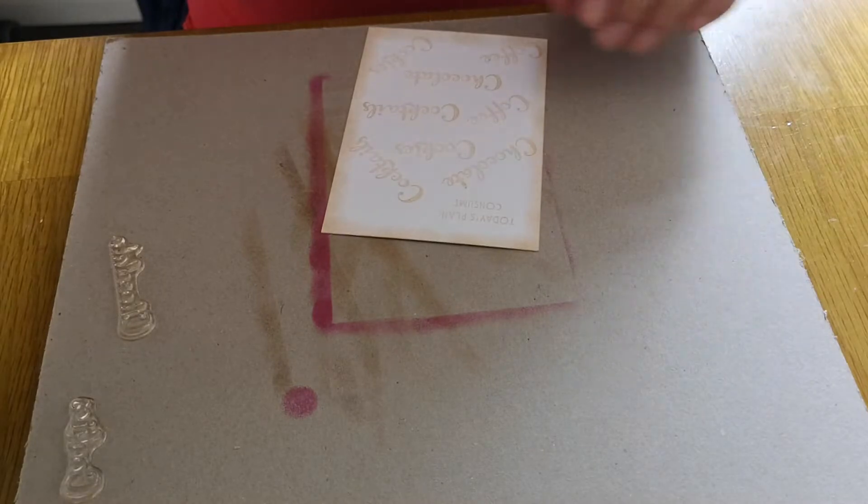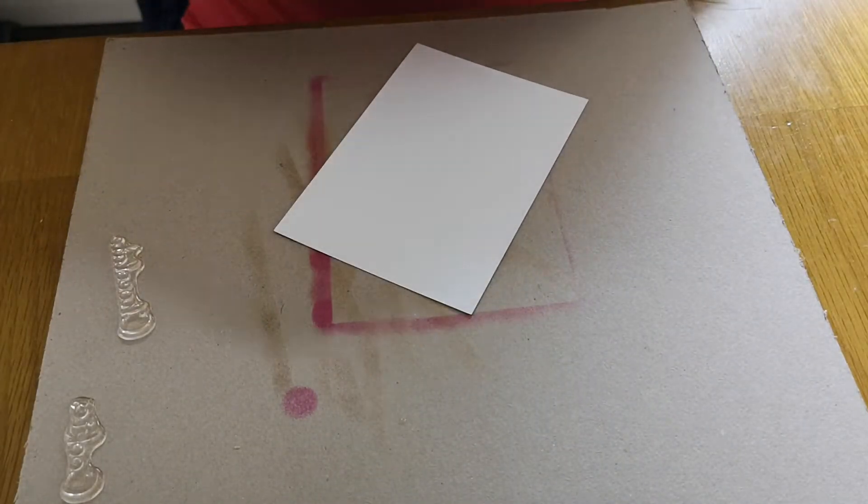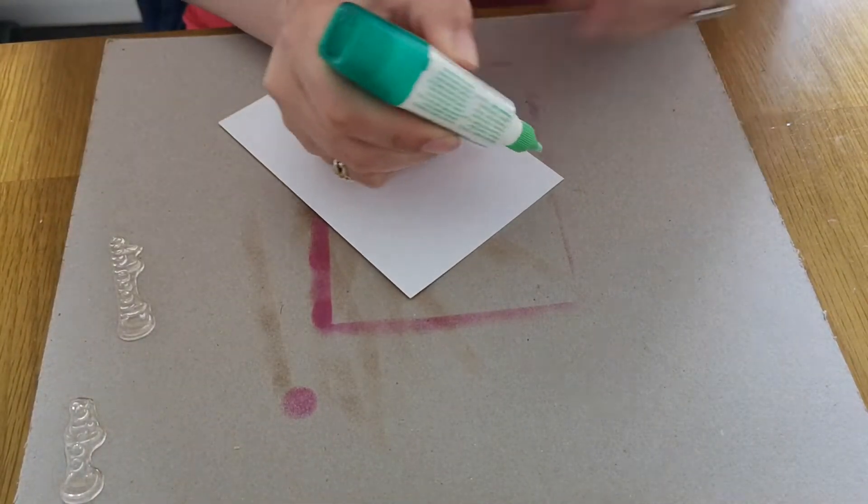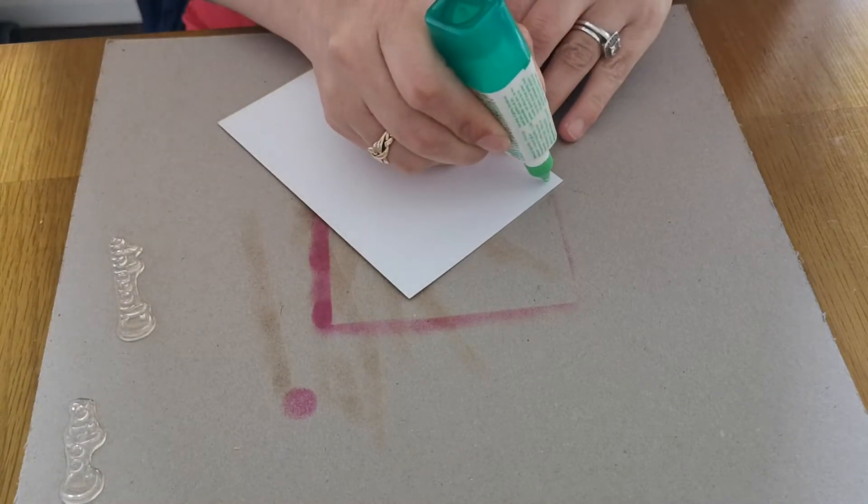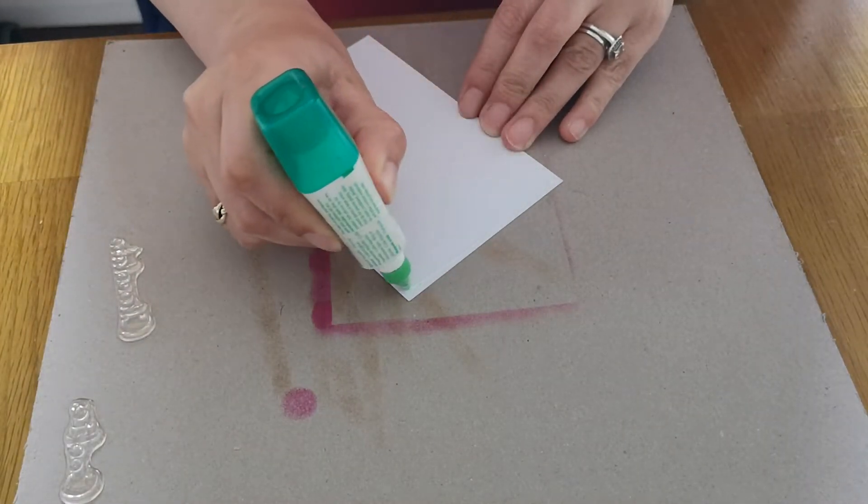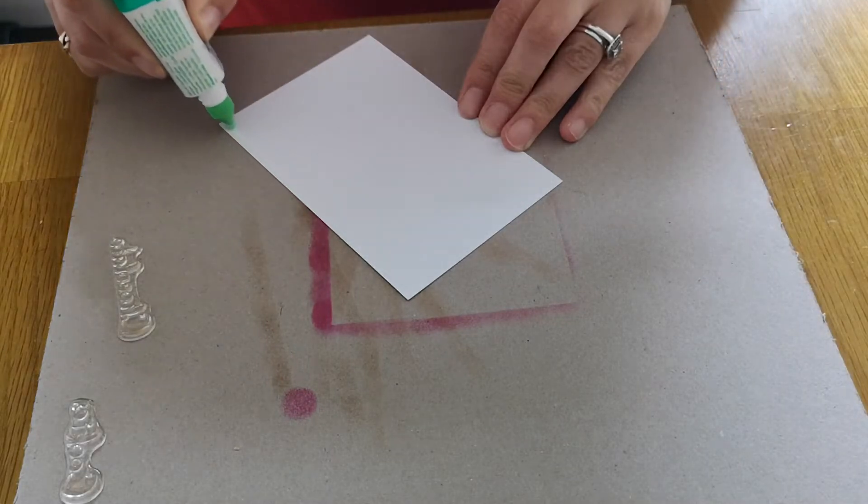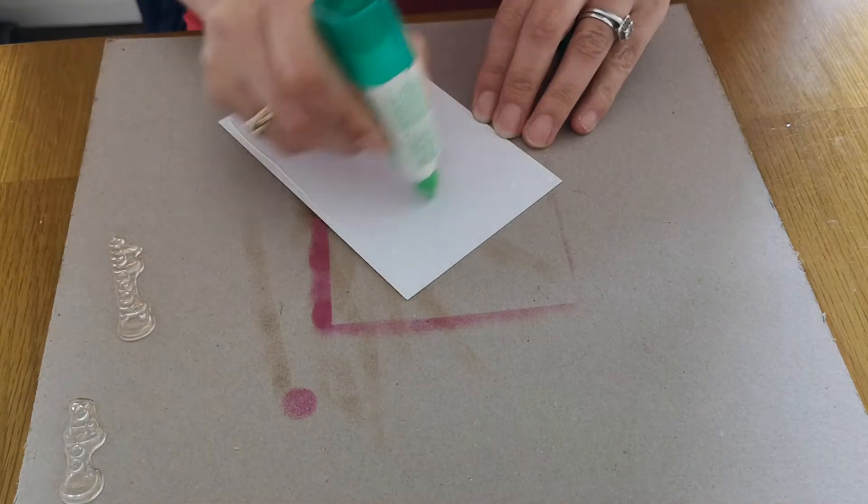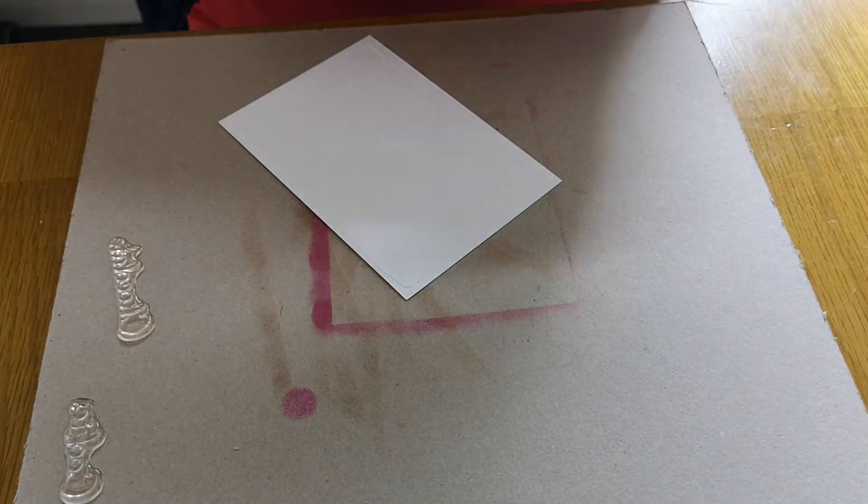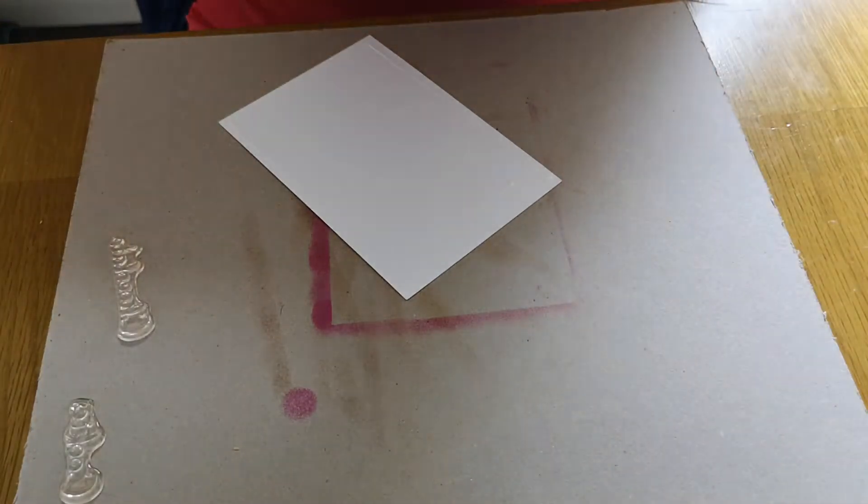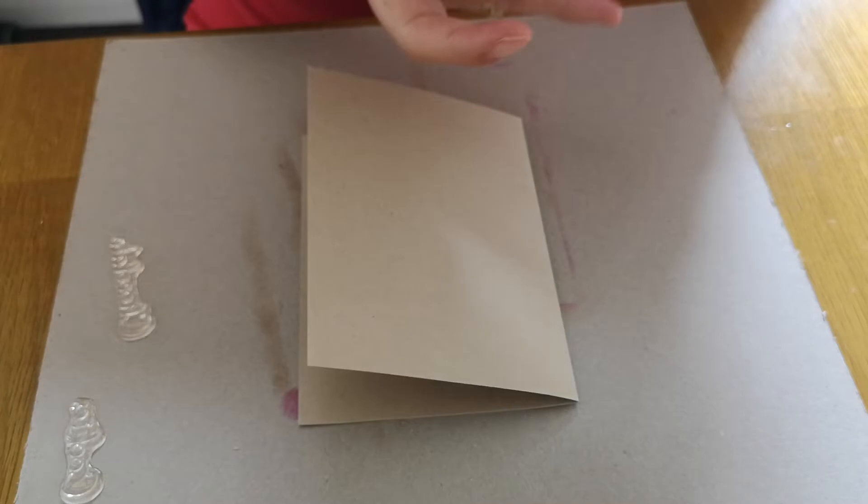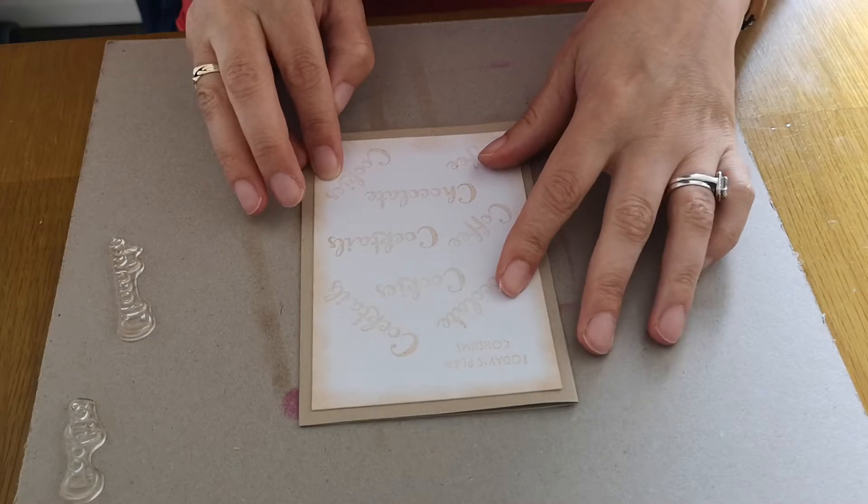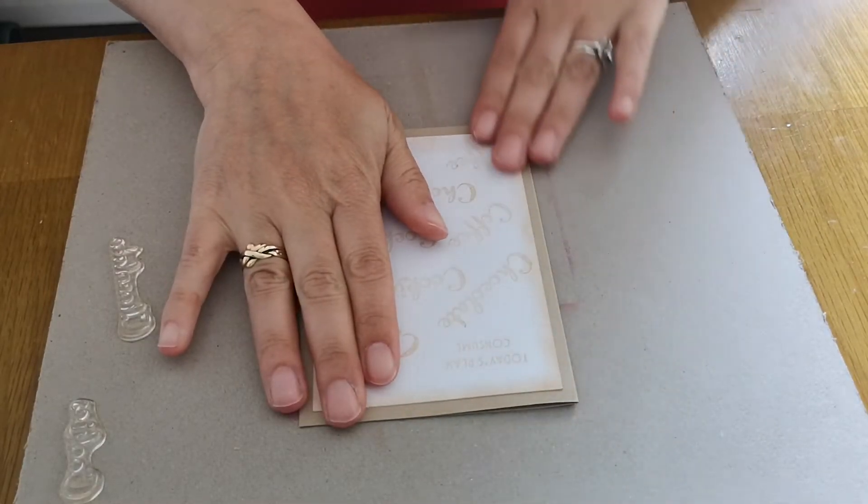So there that there is our background. Now we need to glue it to our card base. I'm using Tombow glue, it dries quite quickly, but the one thing that I love about it is if you get a gluey mess on the front of your card there is a glue eraser which looks just like a rubber and it takes it clean off. It's amazing. That's why I like it so much because I make a lot of mistakes sometimes.